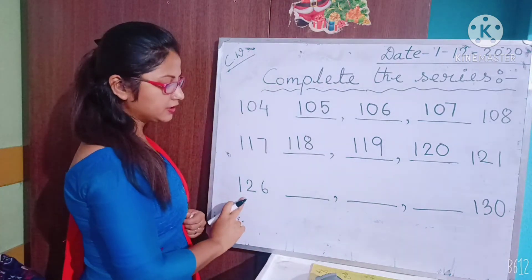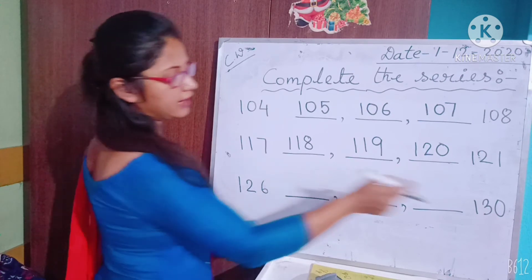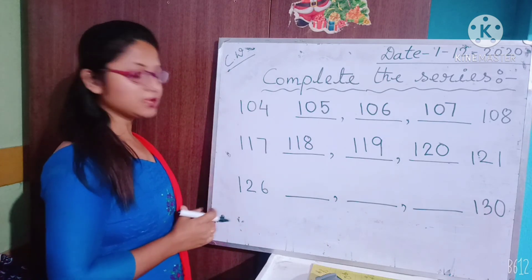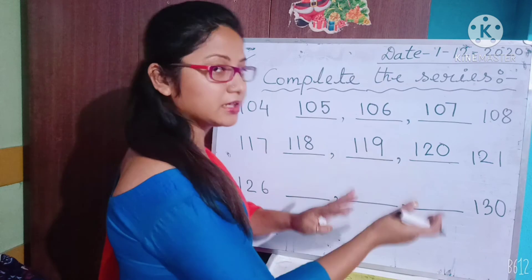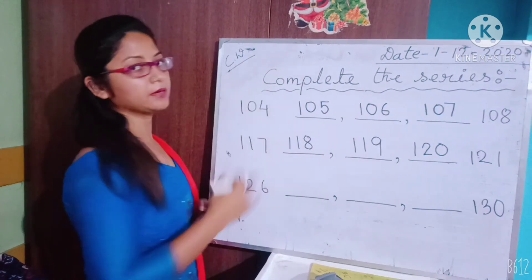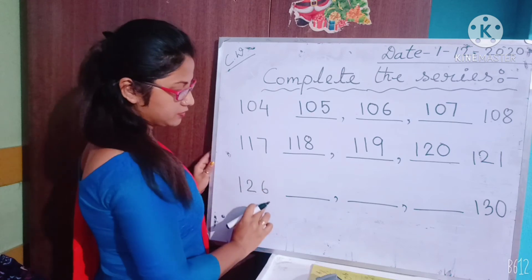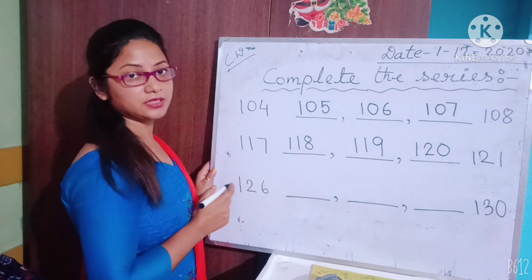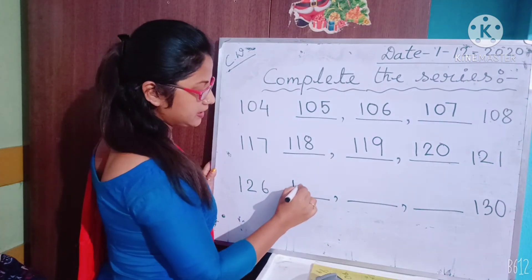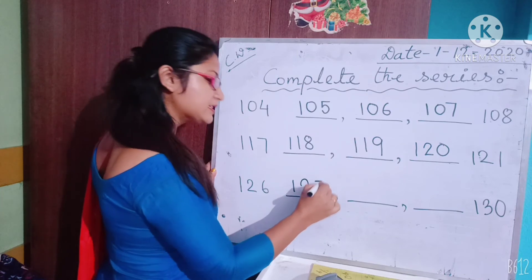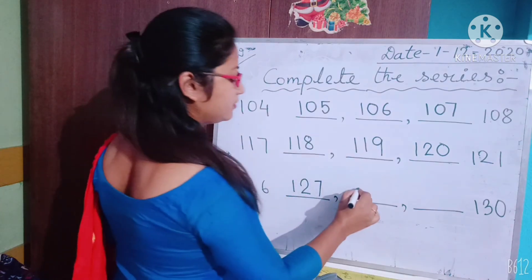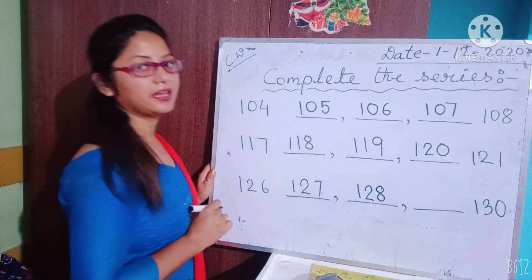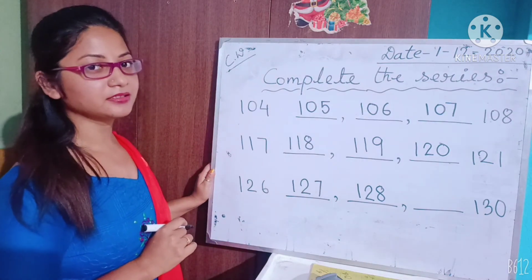Now the last line: 126, and the last number is 130. You have to write numbers between 126 and 130. Which number comes after 126? 127. Then 128. Then 129.